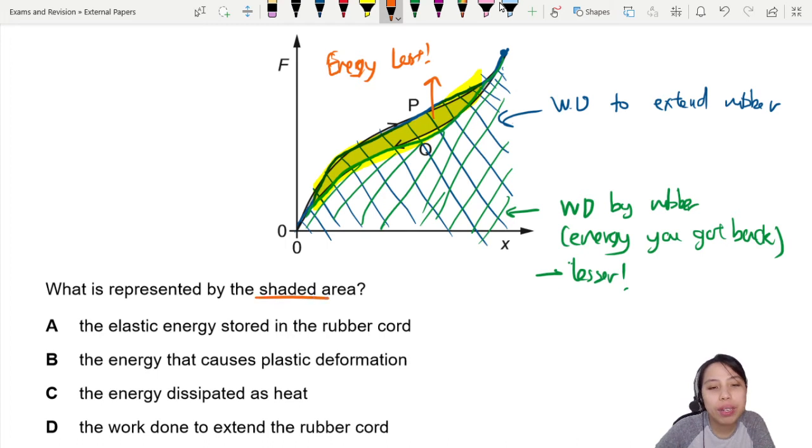So what is represented by the shaded area? This is what they're referring to. Elastic energy stored in the rubber cord? No, that would be one of the blue areas.